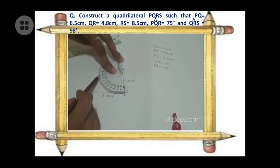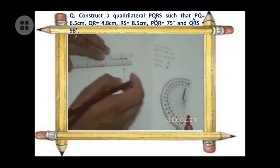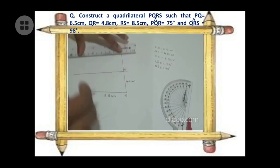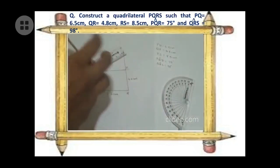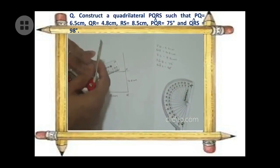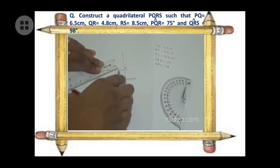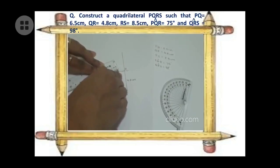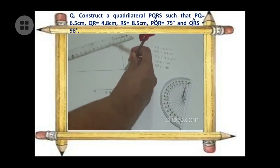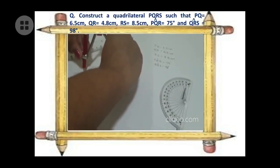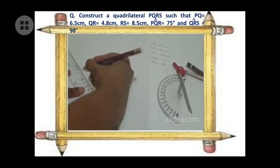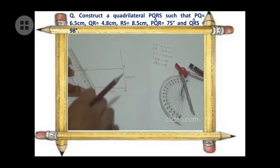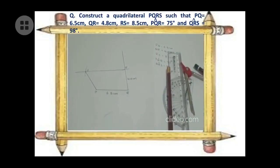Mark 98 degrees and draw a line from R. Since RS = 8.5 cm, measure 8.5 cm on your compass, keep it at R, and draw an arc on that line — the point you get is S. Now join P and S to get the required quadrilateral PQRS.